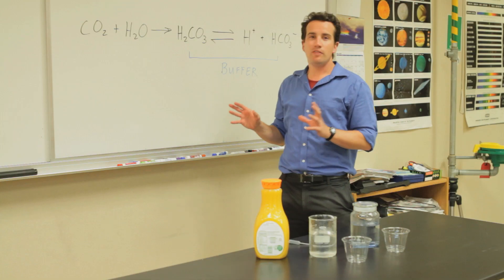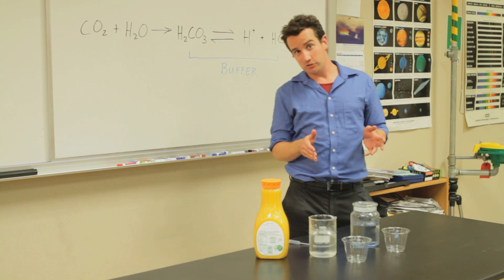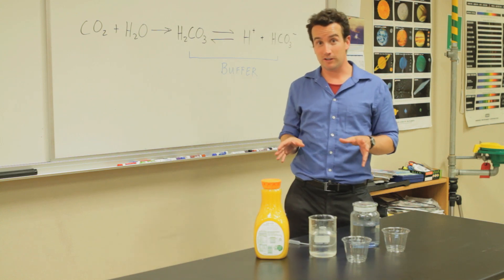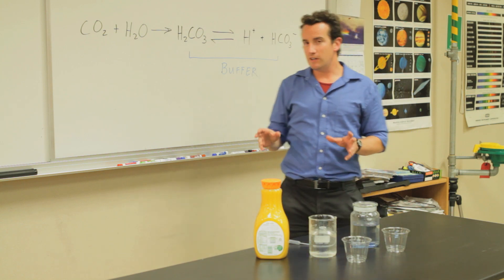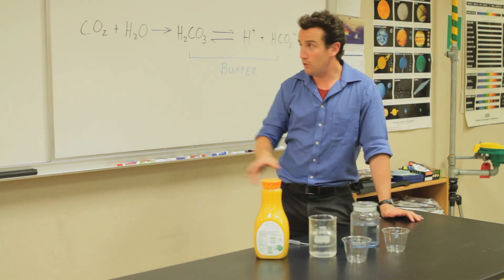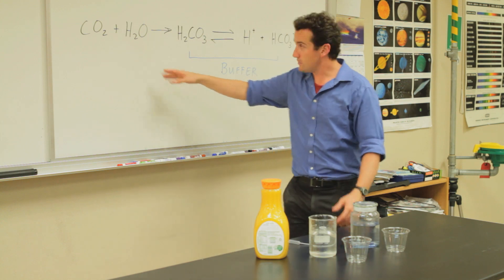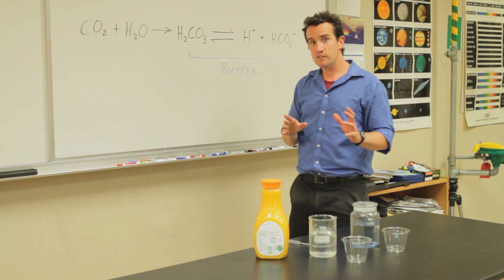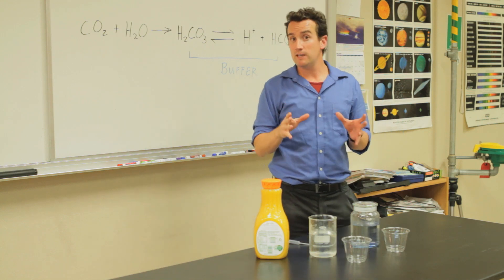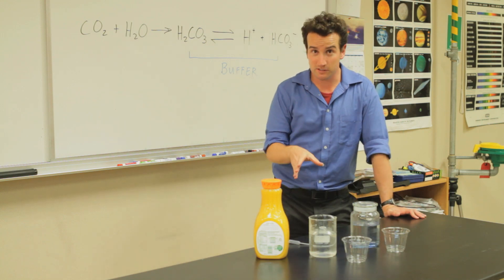Now, by far the most important buffer solution in biology is carbonic acid and its conjugate base. In your blood is CO2 and H2O which combine to form carbonic acid, H2CO3, and that's the buffer that keeps the pH of your blood nearly constant.